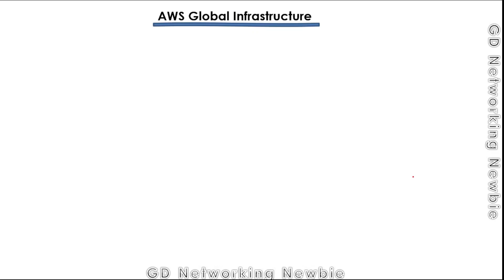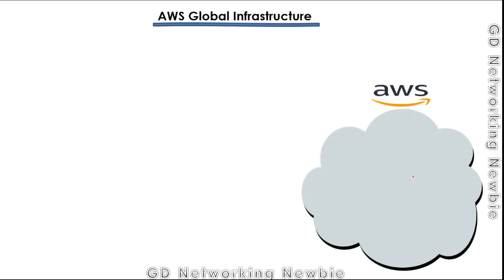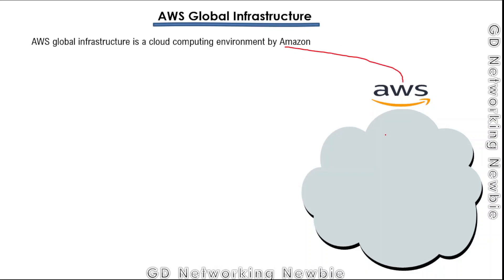Hi everyone. In this video we are going to discuss about Amazon Web Services or AWS Global Infrastructure. We started our discussion from our previous video that Amazon Web Services are services which we can access using an internet connection or some network connection. Amazon has cloud computing services running somewhere in the cloud, and AWS Global Infrastructure is a cloud computing environment managed by Amazon. We can get a portion of that cloud or subscribe for some of the services offered by AWS.